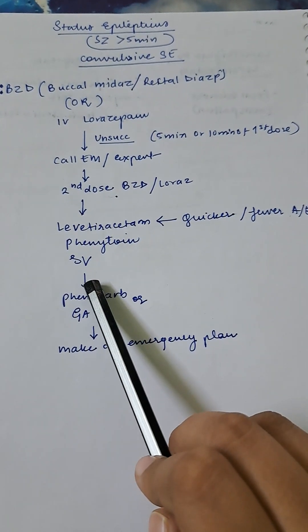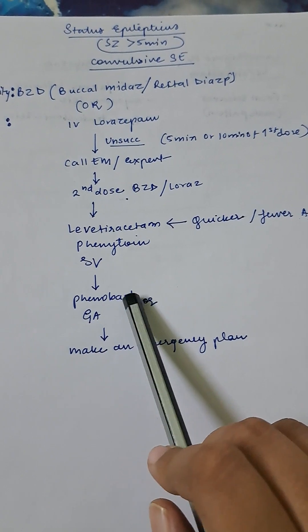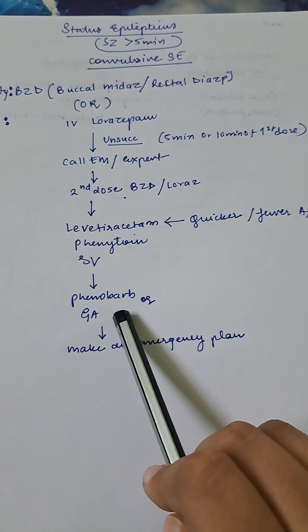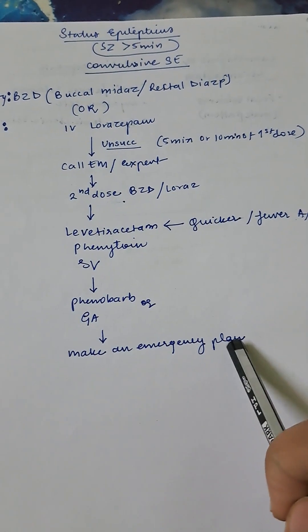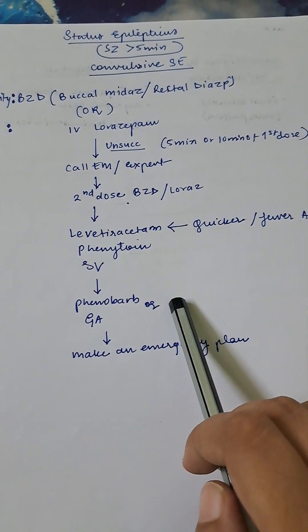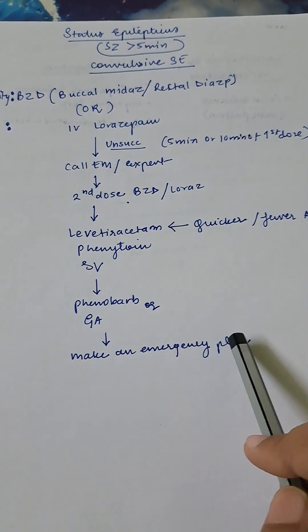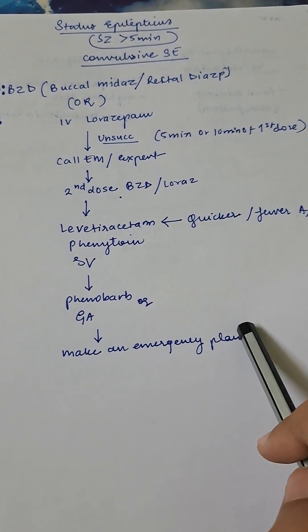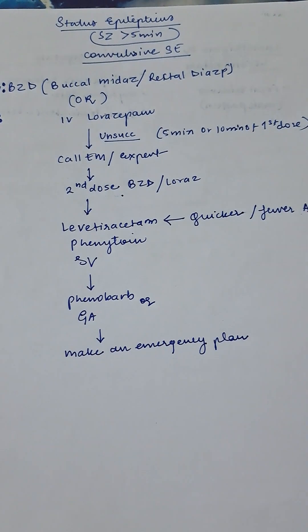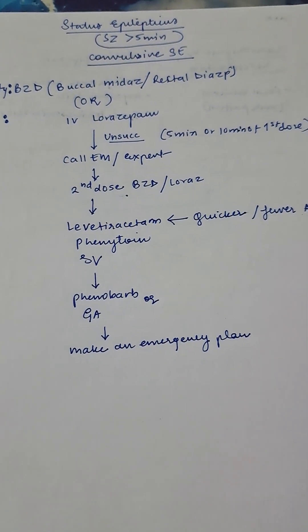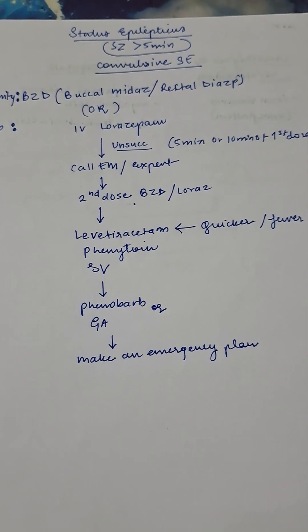Despite this, if the treatment is unsuccessful, then you will give phenobarbital or general anesthesia. After treatment, you will make an emergency plan for this patient in case it recurs. You will follow this emergency plan for future episodes.